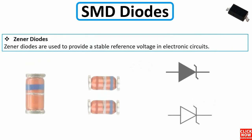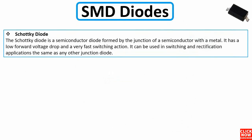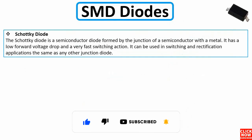Zener diodes are used to provide a stable reference voltage in electronic circuits. As you can see in the image, this is a real Zener diode — it always has a blue band, and that blue band indicates the cathode or negative terminal. Its symbol is different from a normal diode, as you can see here.